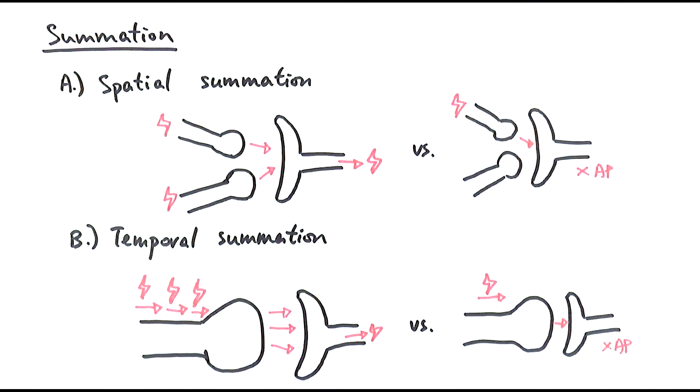So this is summation, which is the mechanism in which we can control if a new action potential will be generated after the synapse, based on the concentration of neurotransmitter being released by the presynaptic neuron.